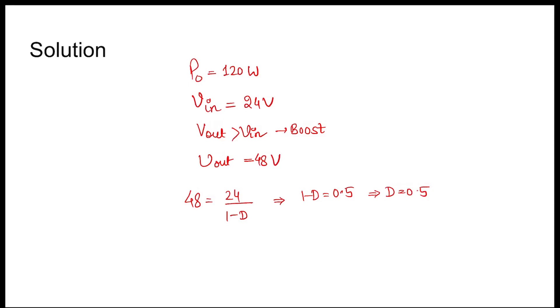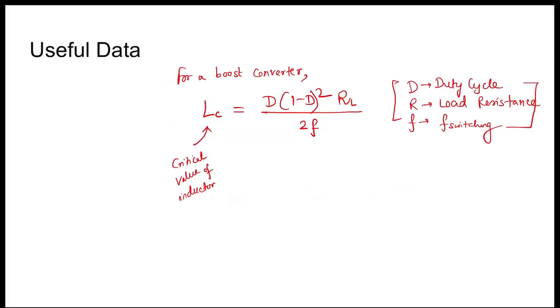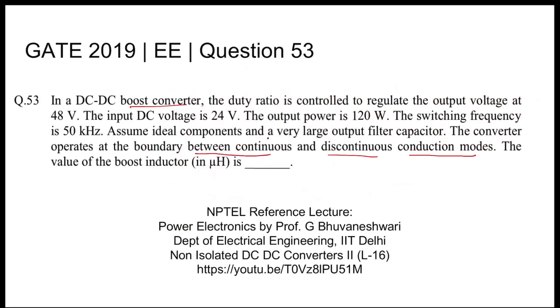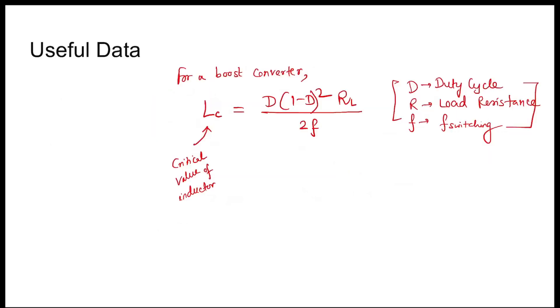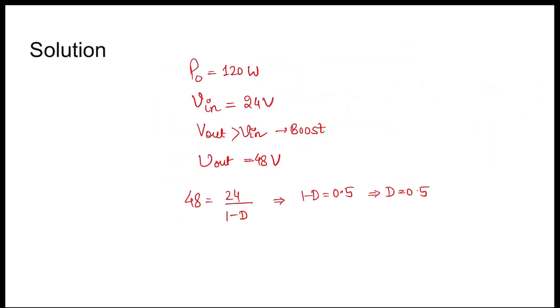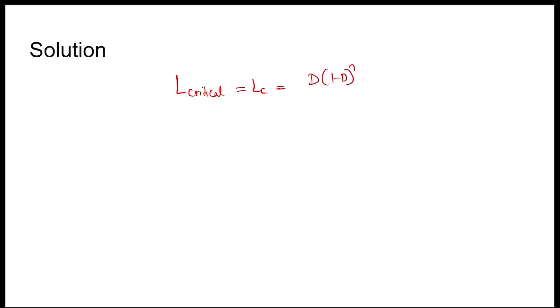And operating frequency, if switching is 50 kilohertz, so f switching is 50 kilohertz. This implies L critical, which is also denoted by Lc, equals D times (1 minus D) whole square times RL divided by 2fs. Now RL should be determined.